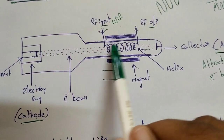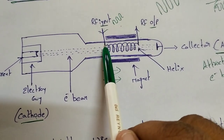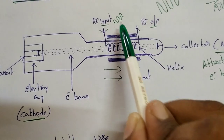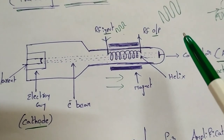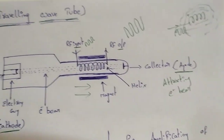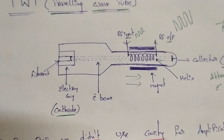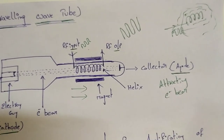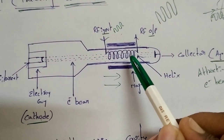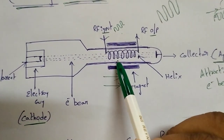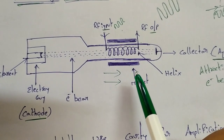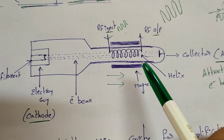The helix has two points — you can input and output at each end. If you have an attenuator, you will use the attenuator in the setup.